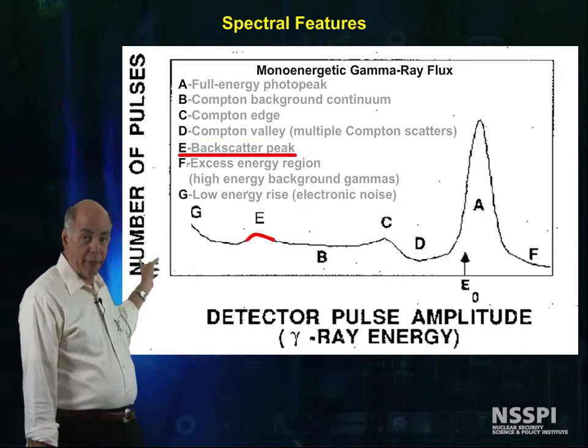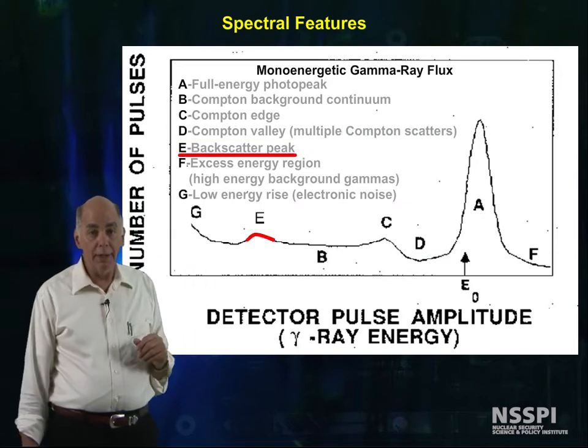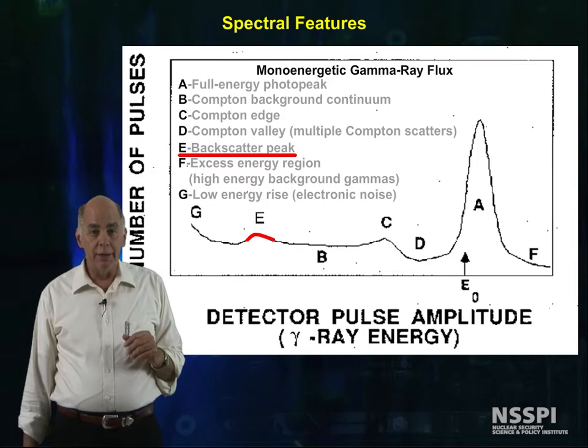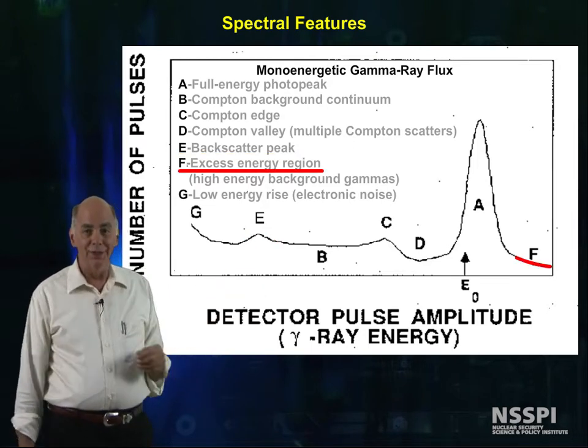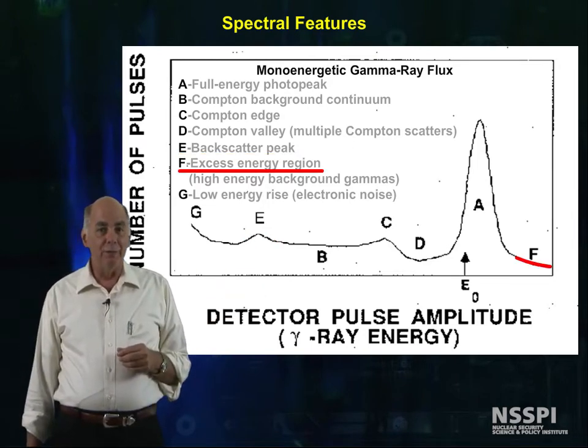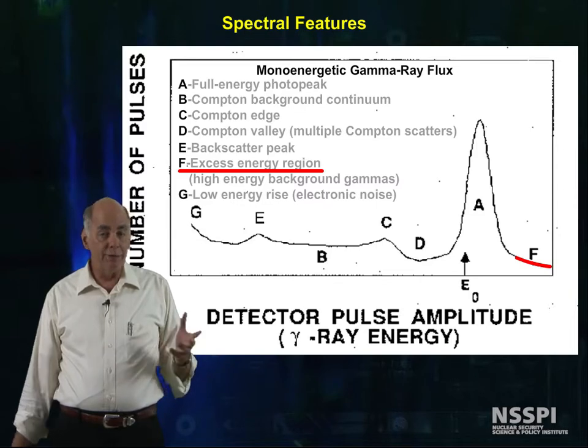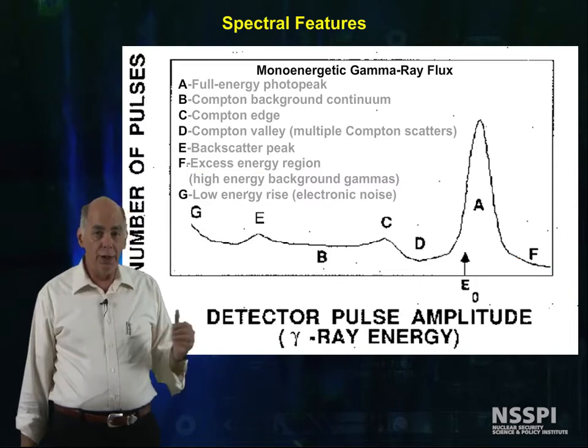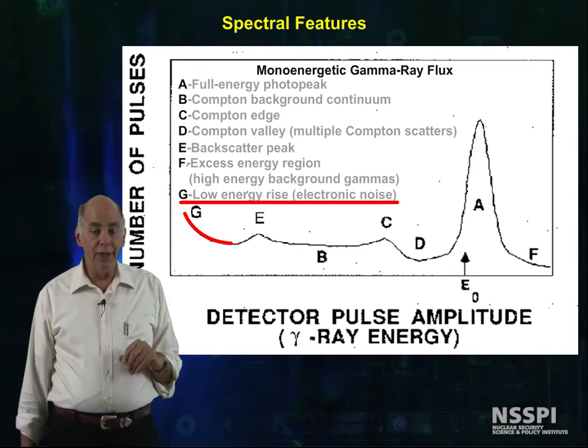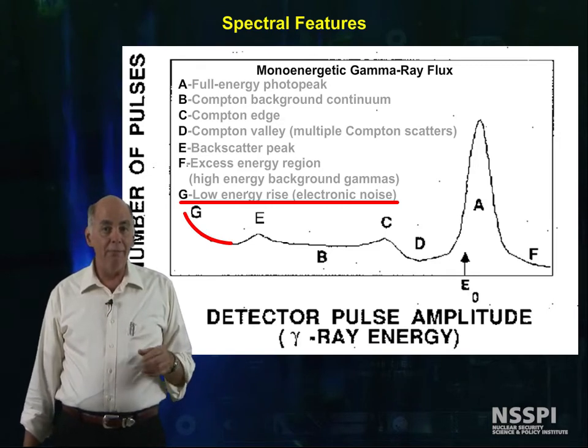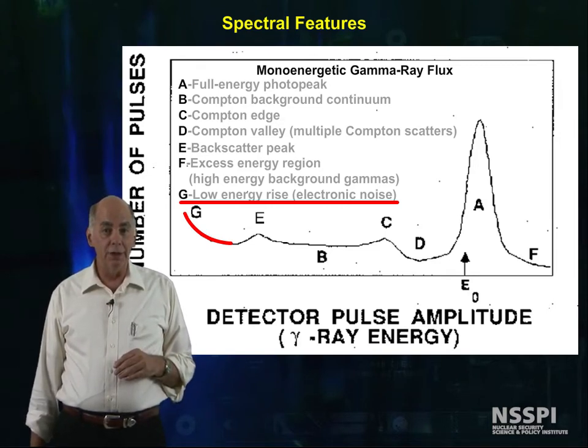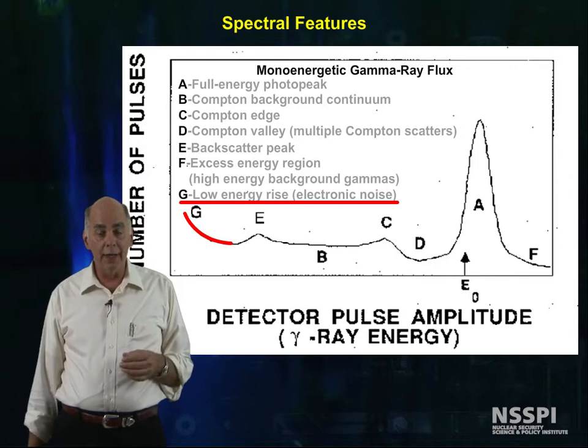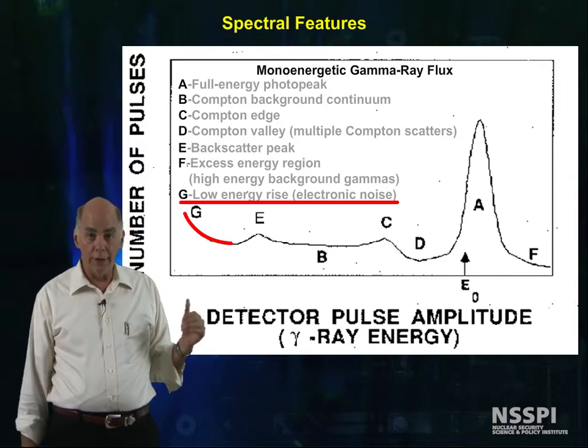Here is a backscatter peak, which we'll talk about in a minute. F is, way over there, is the energy from higher energy gamma rays from background, and G, over this way, is the electronic noise. We are amplifying things enough that the noise inherent in the electronics shows up at the low end of the spectrum.